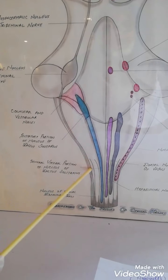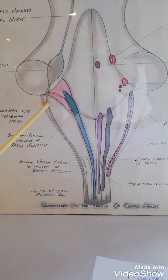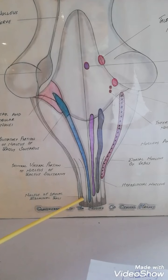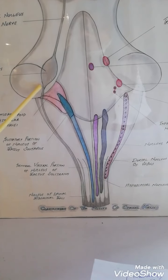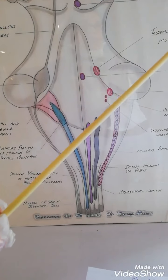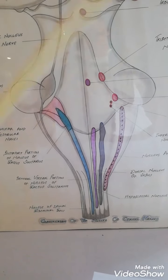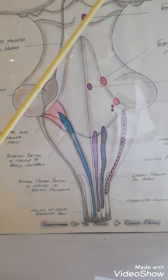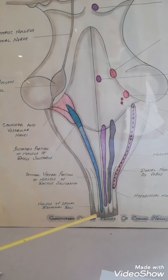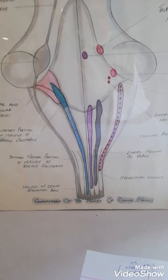The spinal nucleus of the trigeminal nerve extends from the C2 spinal cord segment up to the level of the pons. So the trigeminal nerve nuclei are spread throughout the brainstem — at the level of the midbrain, pons, and even down to the C2 spinal cord segment.